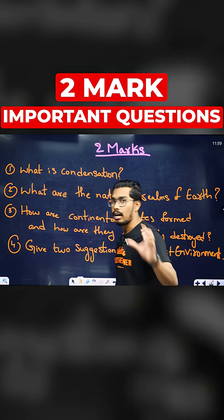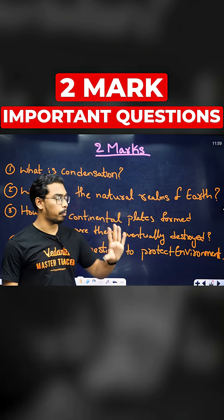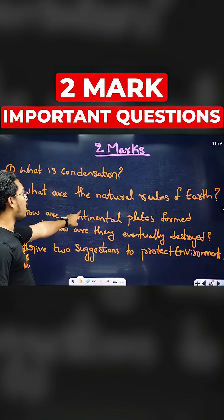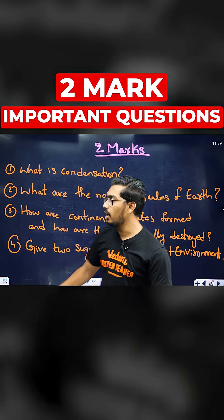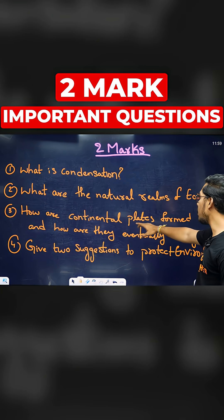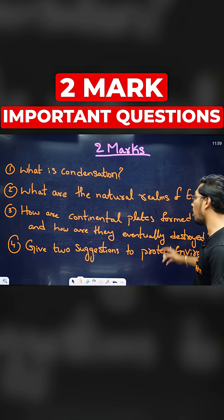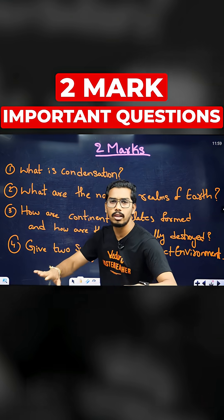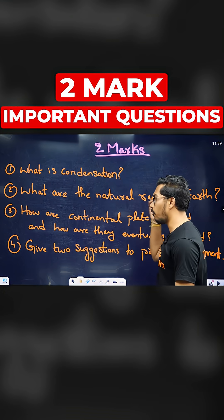What is condensation? Condensation is the way to explain. What are the natural realms of the earth? How are continental plates formed and how are they eventually destroyed? Continental plates are formed or destroyed — 2 marks, simple, 1 to 3-4 lines.